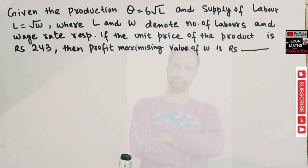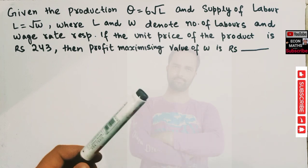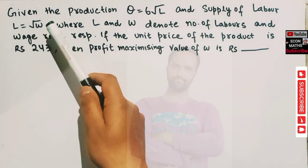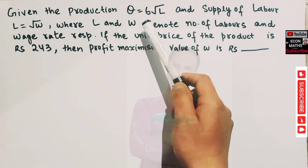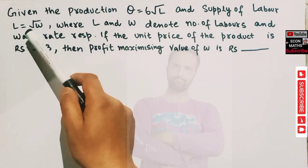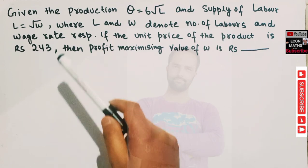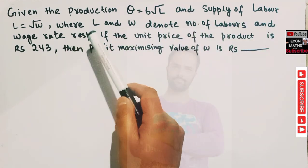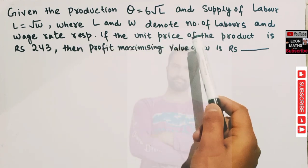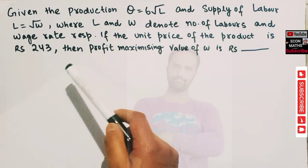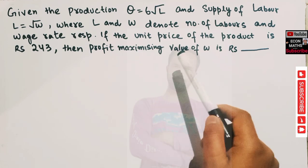In this video we will try to solve a problem that was asked in the IIT JM Economics paper of 2022. The question is: given the production function q = 6√L, and supply of labor is given as L = √w, where L and w denote number of laborers and wage rate respectively, if the unit price of product is rupees 243, then find the profit-maximizing value of wage rate.